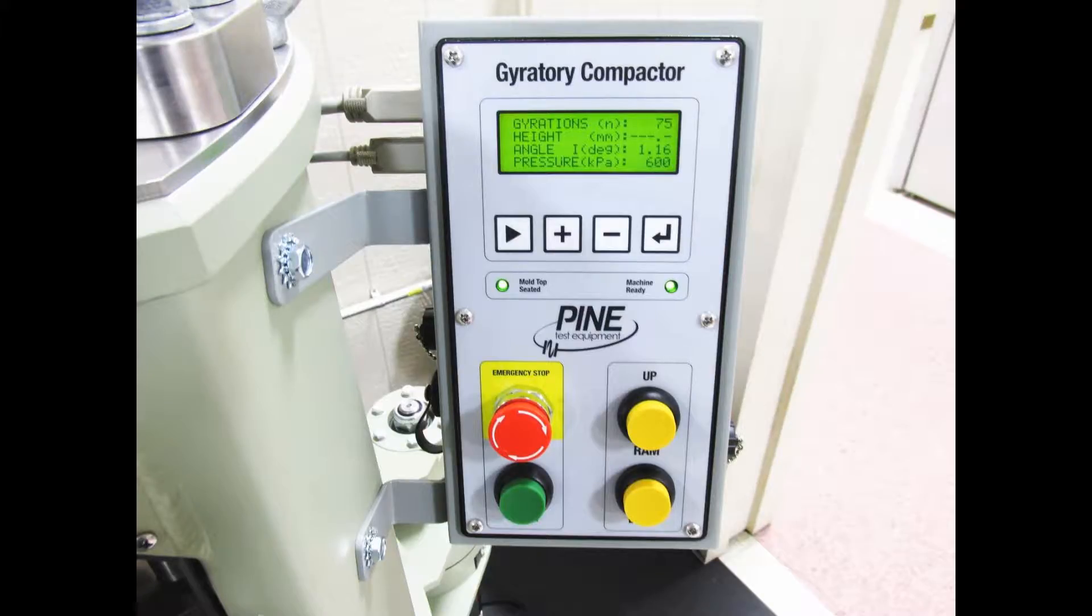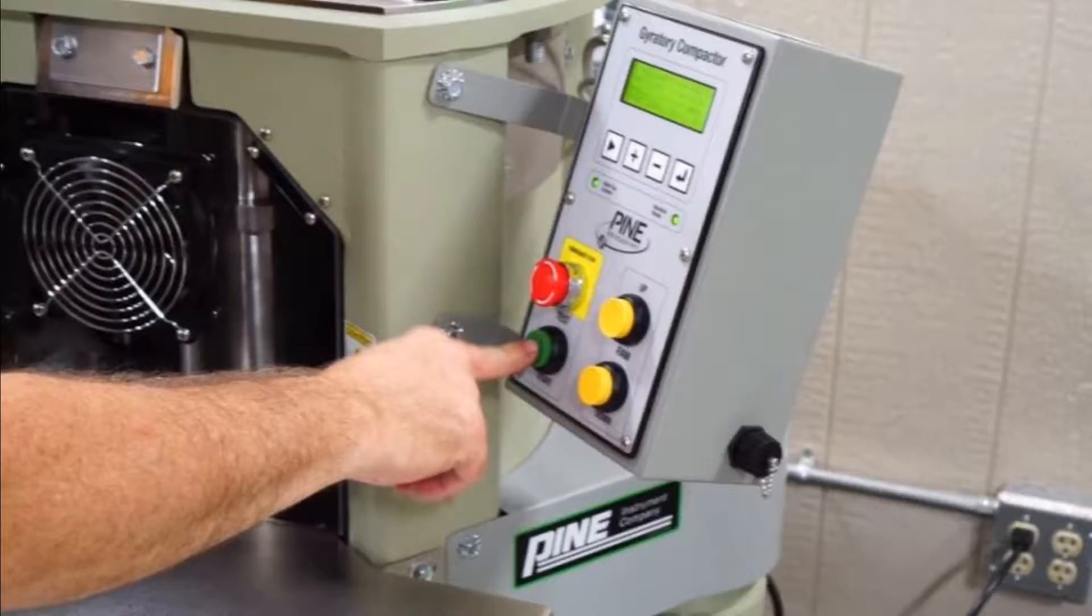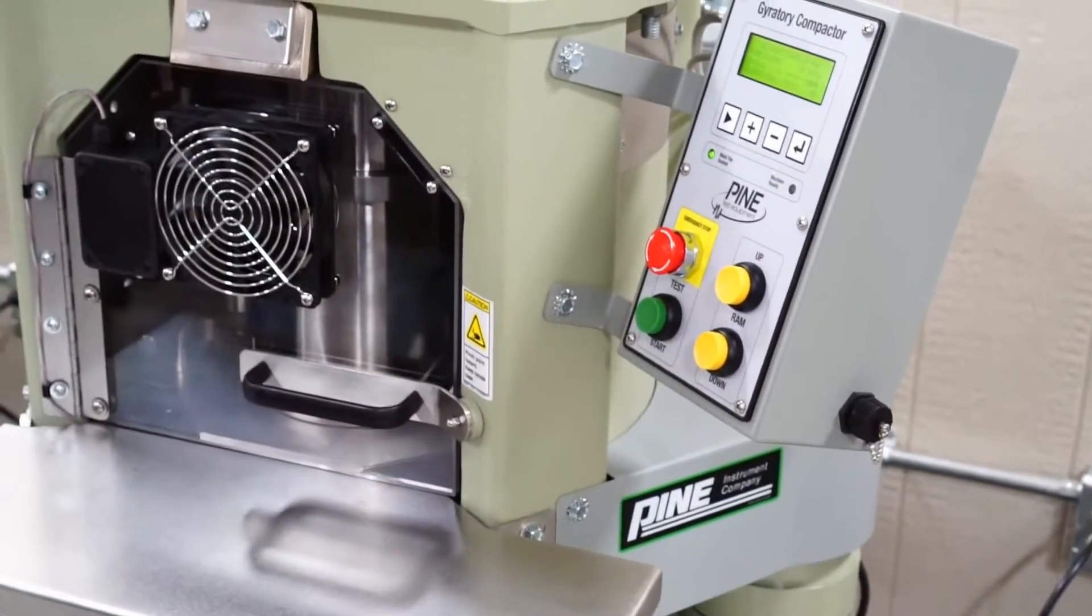The LEDs on the front panel indicate when the machine is ready to operate. When the machine is ready, the operator presses a button to begin compaction.